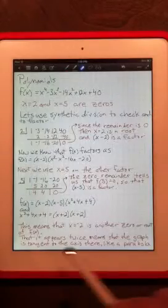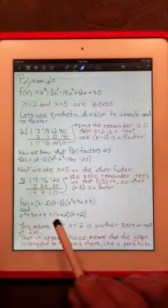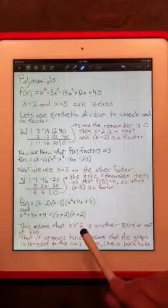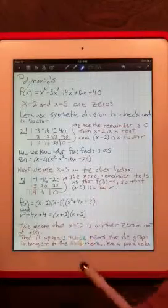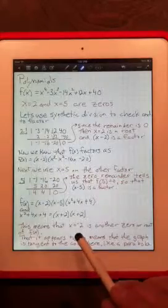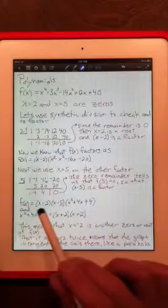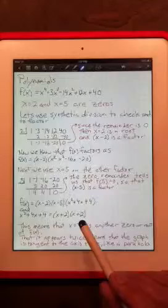Extra information here. If x plus 2 is a factor, then x equals negative 2 has to be the zero. Because if you plug negative 2 in there, negative 2 plus 2 would give you 0. Now, also, it occurs twice. Notice the x minus 2 only occurs once, x minus 5 occurs once, but x plus 2 occurs twice.